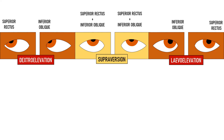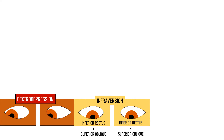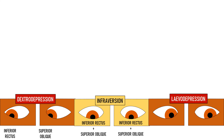In dextro elevation and levo elevation, we are able to isolate and test the action of a single extraocular muscle of each eye. Similarly, when the eyes gaze down, both inferior rectus and superior oblique of each eye are involved. To isolate individual muscles, we test in oblique gazes. In dextro depression, we isolate the right eye's inferior rectus and the left eye's superior oblique. In levo depression, we isolate the right eye's superior oblique and the left eye's inferior rectus — one extraocular muscle of each eye.